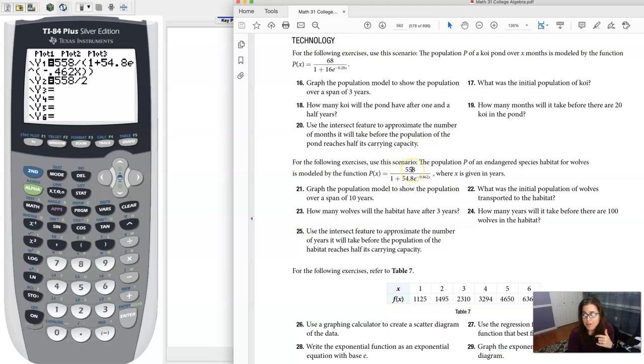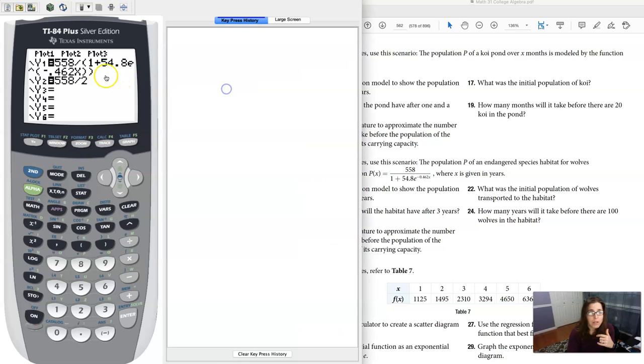You can see its carrying capacity up there is 558, so I want to find out when this logistic function is going to hit half of the carrying capacity. You could just do 558 divided by 2 and find out it's 279. I'm just plugging it into my calculator here.